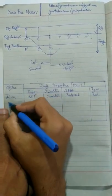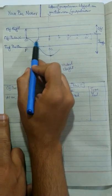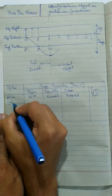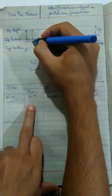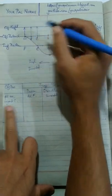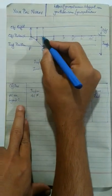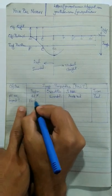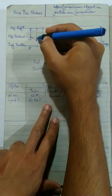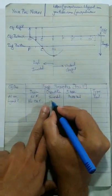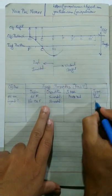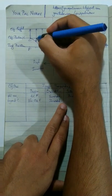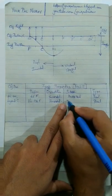Case 2: when the object is placed beyond C, meaning between infinity and C, the image is formed between C and F. Therefore position is between C and F. Orientation is inverted because it is on the real side. Type is real because it is on the left side of the dividing line. Size is diminished — the object height is two lines but the image height is only one line.